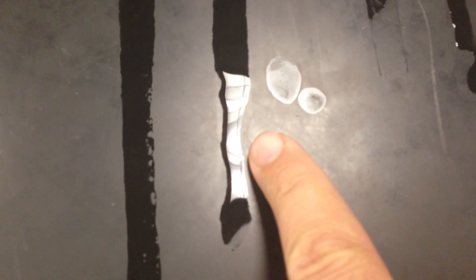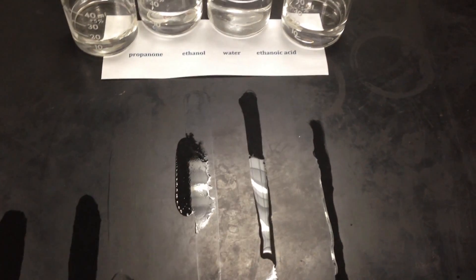Look how the ethanoic acid looks like it's disappearing, but it's just attracting each other so strongly it's making a thicker line right there. Alright, anyway, that's a demonstration. Thank you.